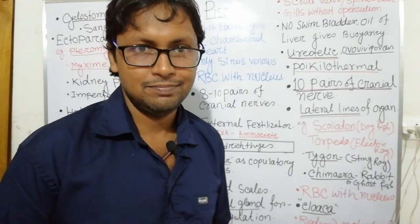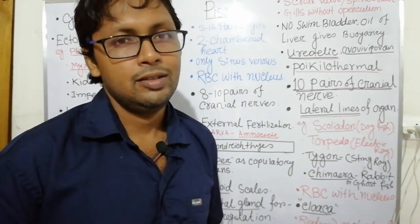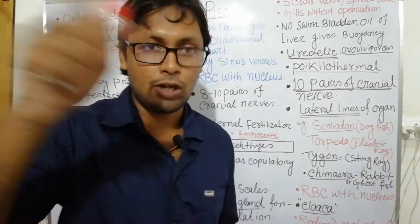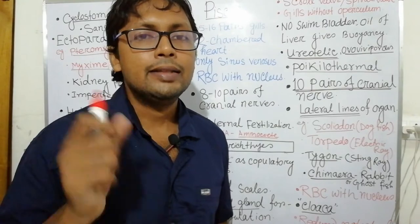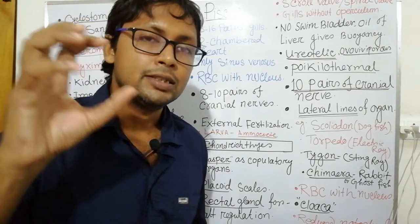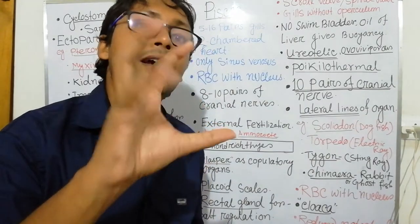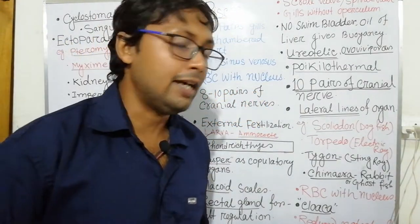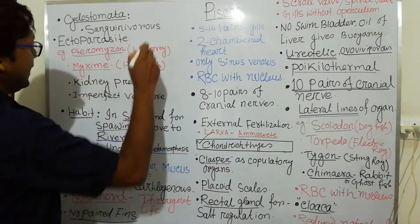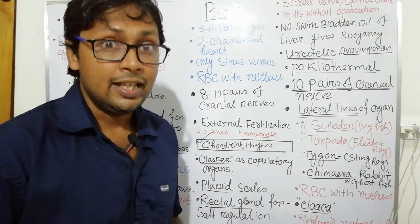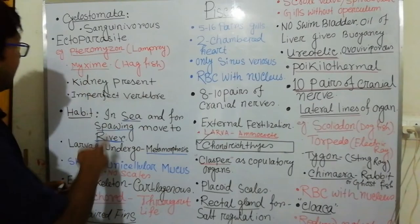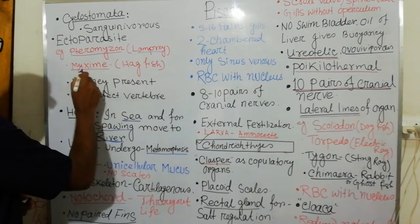Pisces are part of Gnathostomata, among the Craniata. Cyclostomata — 'cyclo' means round, 'stomata' means mouth — they have a round mouth with lots of teeth around it. They have a suctorial mouth; they suck and are ectoparasites that absorb blood. Cyclostomata are sanguinivorous, meaning blood-lovers. They are ectoparasites on larger fishes, attaching themselves to the surface and absorbing blood as food. Examples: Petromyzon (lamprey) and Myxine (hagfish).